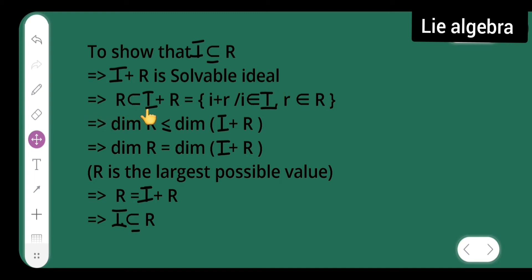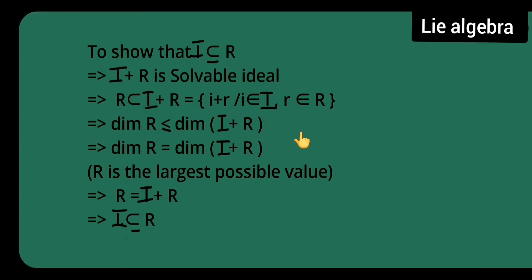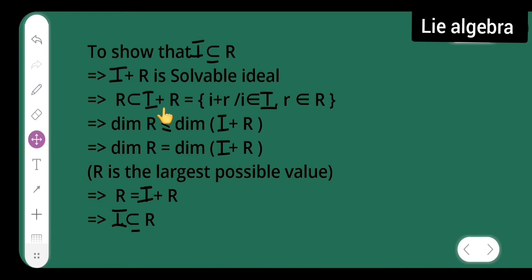Now r is the solvable ideal of largest possible dimension, and r is a subset of i + r, which is the set of elements i + r where i belongs to capital I and r belongs to capital R. This implies that the dimension of r is less than or equal to the dimension of i + r.